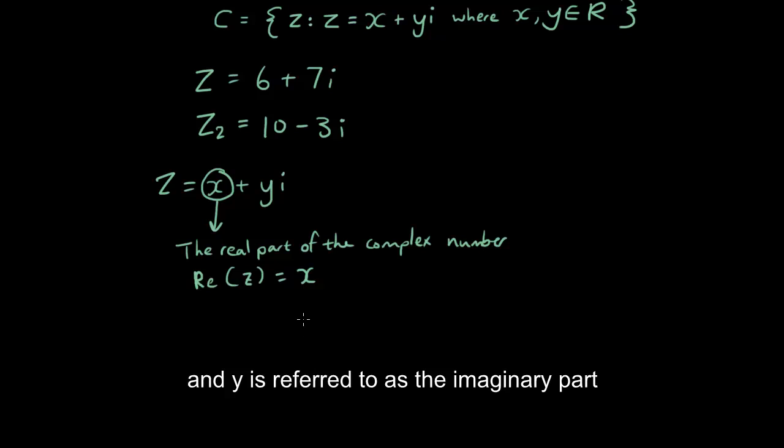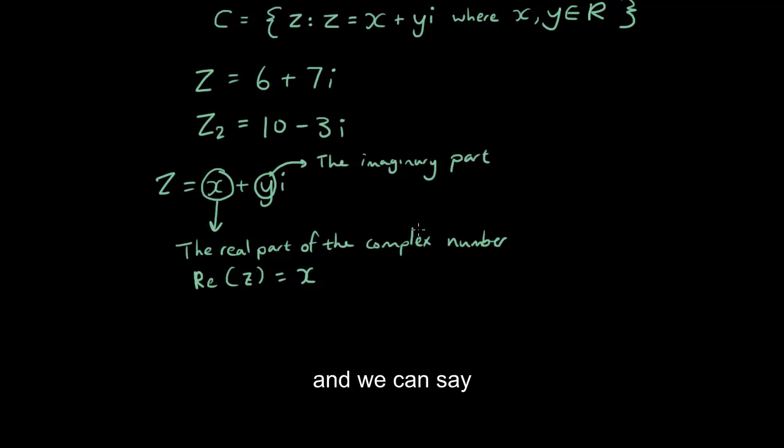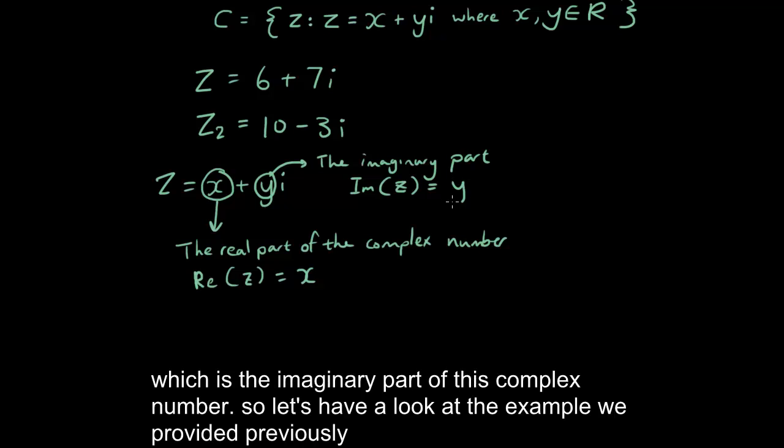And y is referred to as the imaginary part of the complex number. And we can say Im(z) will output back to y, which is the imaginary part of this complex number.